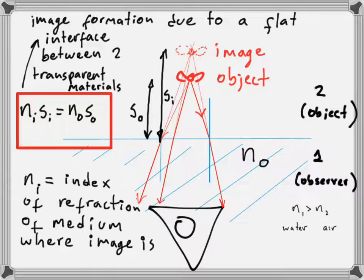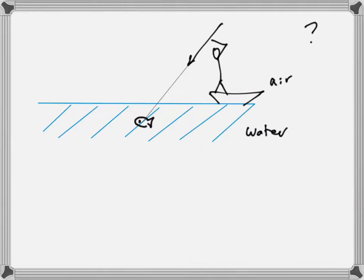This equation describes image formation due to a flat interface between two transparent materials. Let's apply it to a specific scenario: a fisherman with a spear trying to catch a fish underwater. The fisherman is in air and the fish is in water.